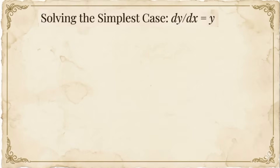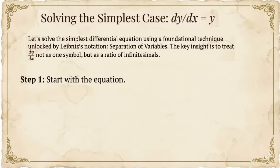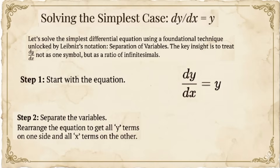Let's start with arguably the simplest differential equation: the derivative of a function equals the function itself, that is, dy/dx = y. You might recognize the solution immediately — it's the exponential function eˣ, because the exponential function is its own derivative. But let's solve this rigorously using separation of variables. Step 1: use Leibniz notation. We have dy/dx = y. We treat dy/dx not as a single symbol, but as a ratio of infinitesimals. Step 2: separate the variables. We rearrange to get dy/y = dx. Now all the y terms are on the left and all the x terms are on the right — the variables are separated.